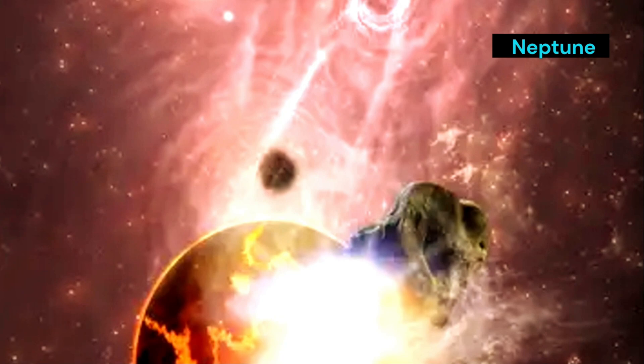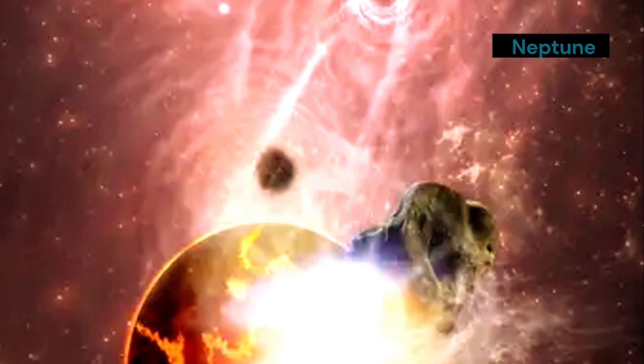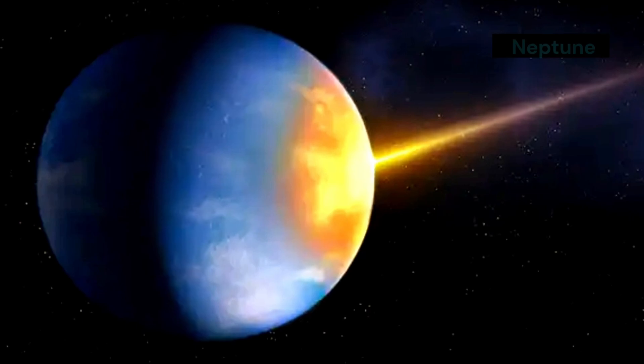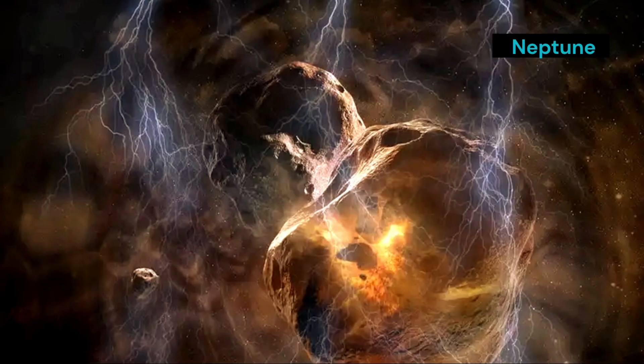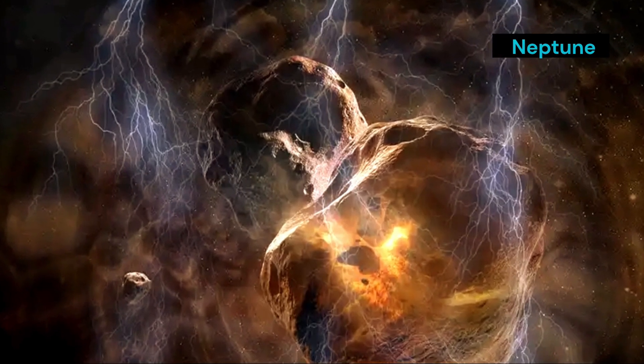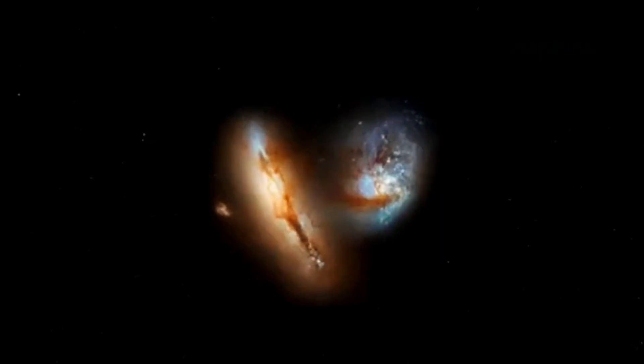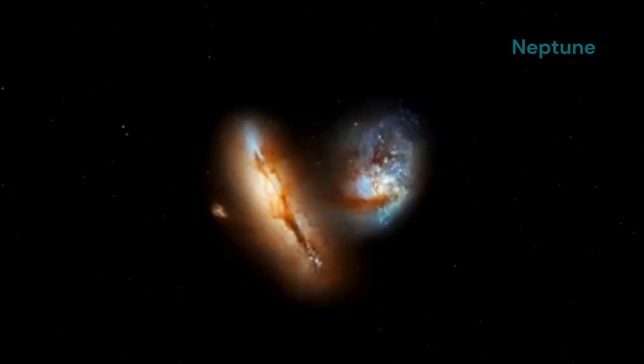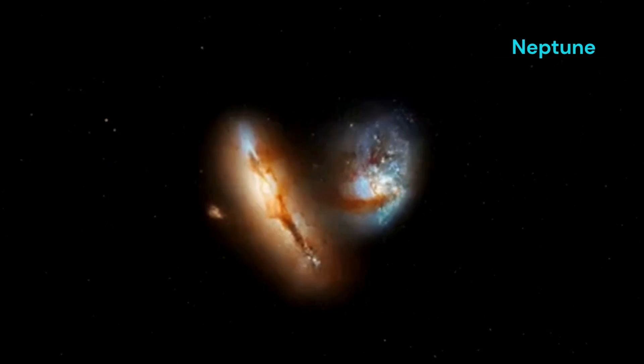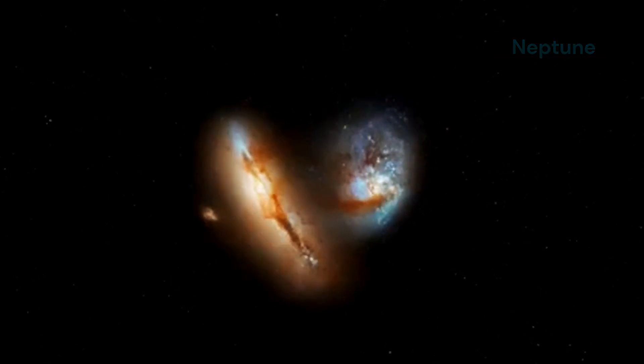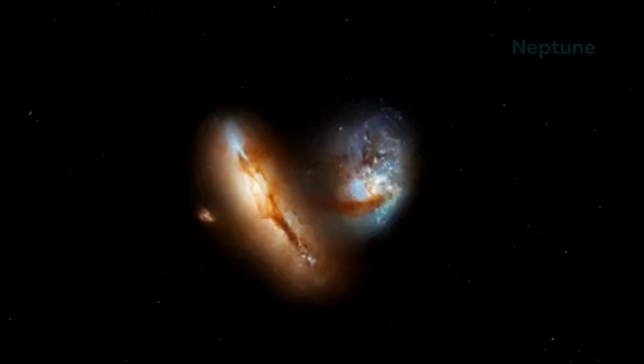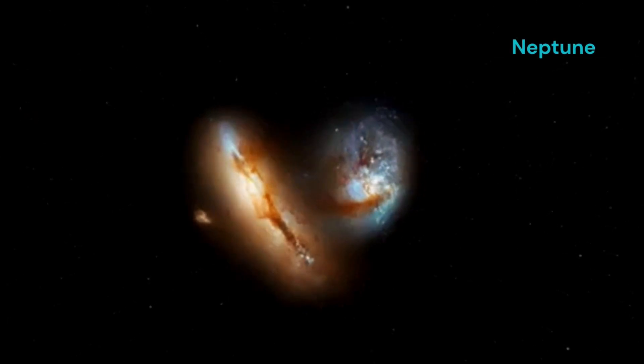Billions of years ago, our solar system was a chaotic disk of gas and dust. This protoplanetary disk was a swirling mass of particles, each one a potential building block for future planets. Over time, particles in this disk collided and stuck together, gradually forming larger and larger objects. These collisions were not random. They were influenced by the gravitational forces at play. These collisions released tremendous amounts of energy, heating up the early solar system. This heat was crucial in allowing the materials to melt and merge, forming the cores of planets.